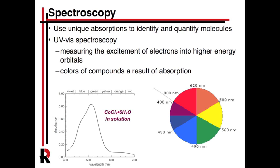We're going to focus today on UV-visible light spectroscopy. This usually involves the excitation of electrons into higher energy orbitals — either an atomic orbital or a molecular orbital. The net result is something we can actually see with our eye: we can see colors.